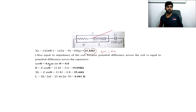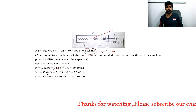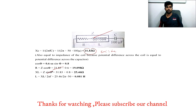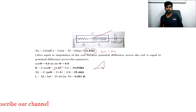To cross-check: Xc = 31.83, Z_coil = Xc, cos φ = 0.6, sin φ = 0.8. R = Z_coil × cos φ, XL = Z_coil × sin φ, and L = XL / (2πf) = 0.081 H. All values verified from the vector/power triangle diagram.